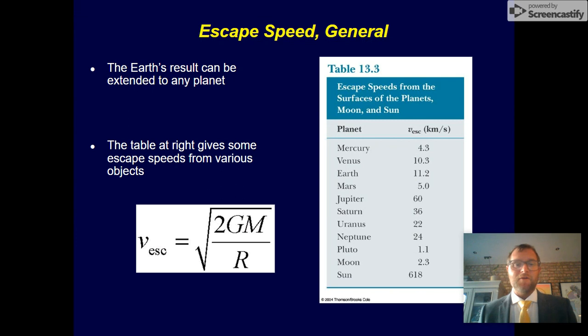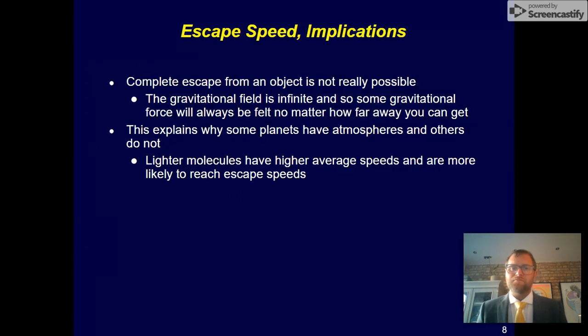These escape velocities are different for every planet, depending on the amount of mass they have. We can't actually truly escape from a gravitational field—it's infinite. We get to the point where the change becomes basically nothing. This is some of the reason why some planets have atmospheres and some do not. If the escape velocity is too low, lighter molecules with high average speeds are more likely to reach escape speed and be lost from the atmosphere.